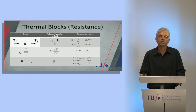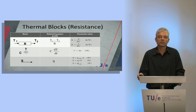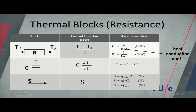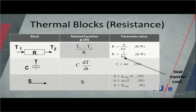We start with the first block: resistance. If you have a material and two different temperatures, heat flow will go from the highest temperature to the lowest temperature. You can calculate the amount of heat flow as T1 minus T2 over its resistance. The resistance is a constant parameter, calculated with formulas. The first is R equals thickness divided by the heat conduction coefficient and the surface. The second is R equals one over h, where h is the heat transfer surface coefficient.